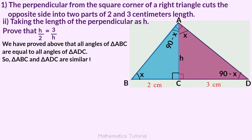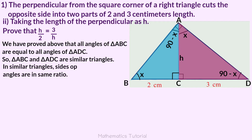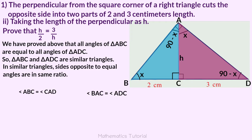Triangle ABC and triangle ADC are similar triangles. In similar triangles, sides opposite to equal angles are in the same ratio. Angle ABC equals angle CAD, angle BAC equals angle ADC, and angle ACB equals angle ACD.